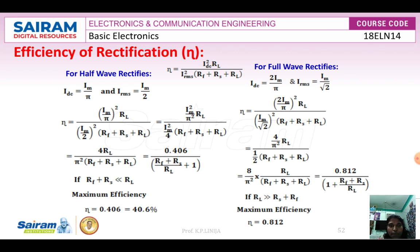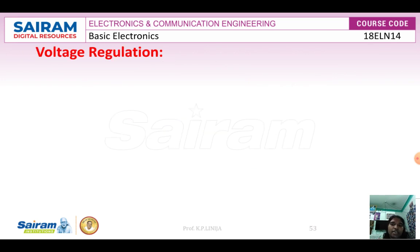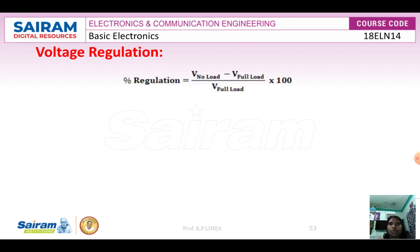This shows how we improve the efficiency of rectification from the half wave rectifier to the full wave rectifier. Next is voltage regulation. Voltage regulation describes how the output voltage varies depending on whether there is a load or no load. The percentage of regulation equals (voltage at no load minus voltage at full load) divided by voltage at full load, times 100.